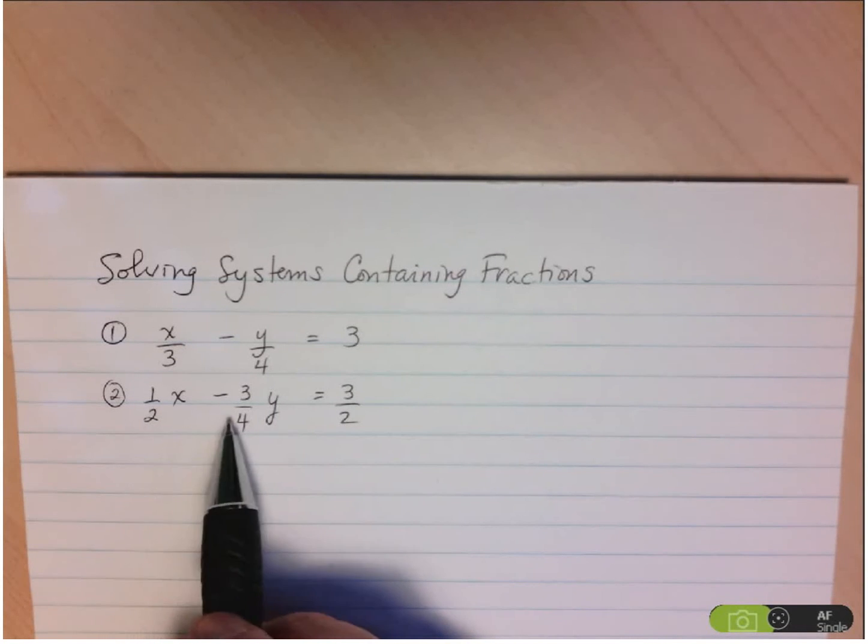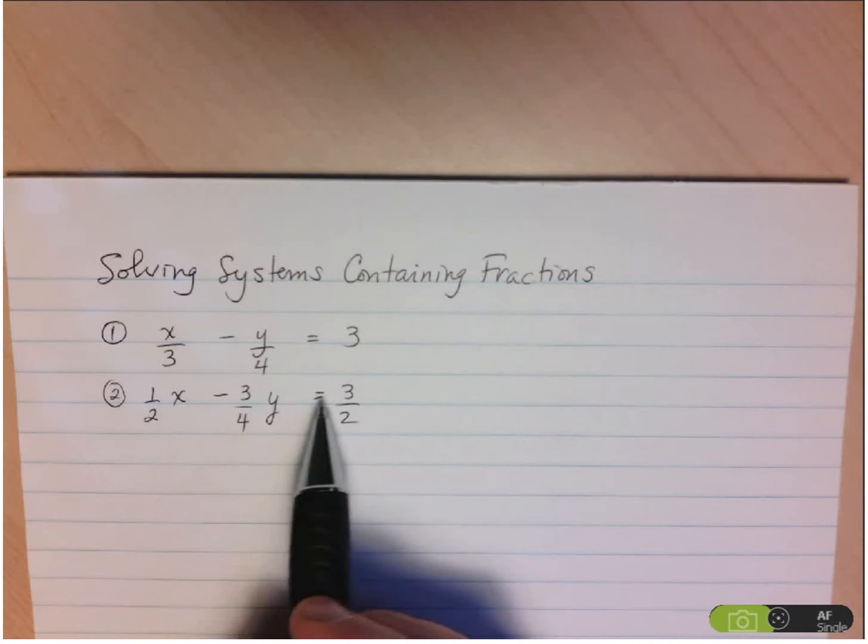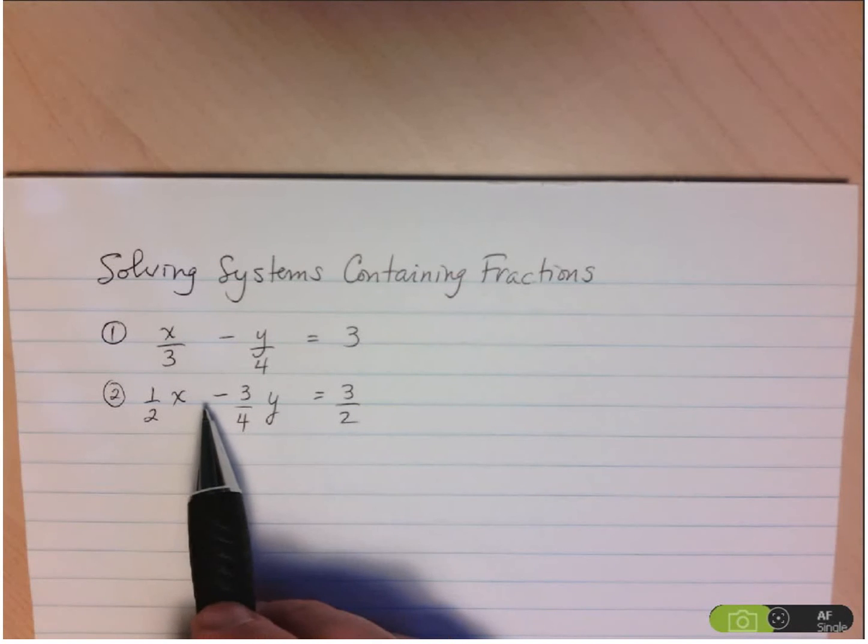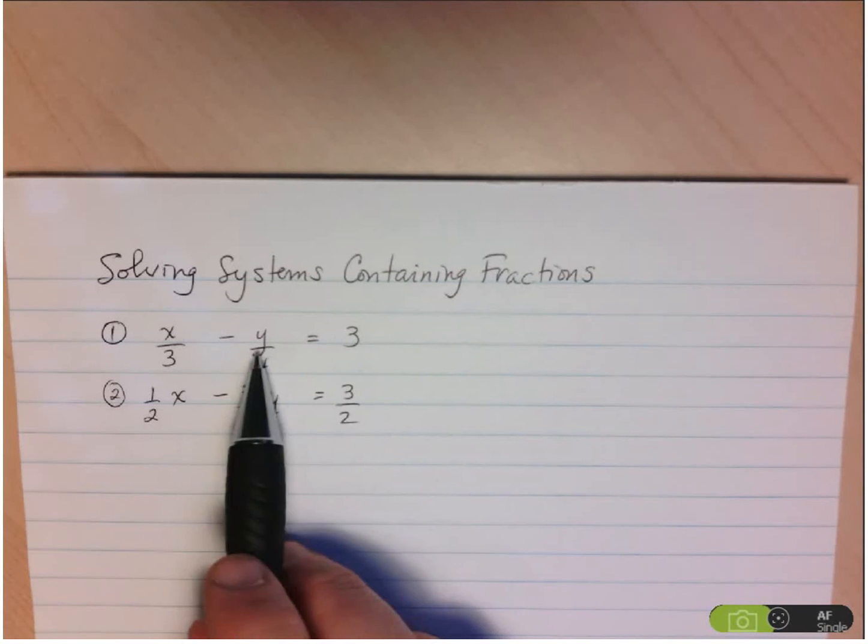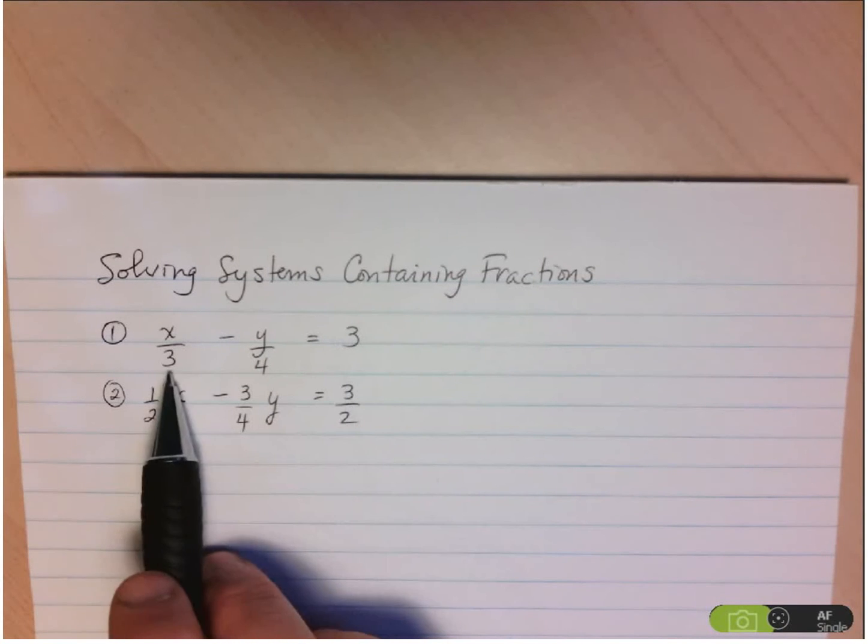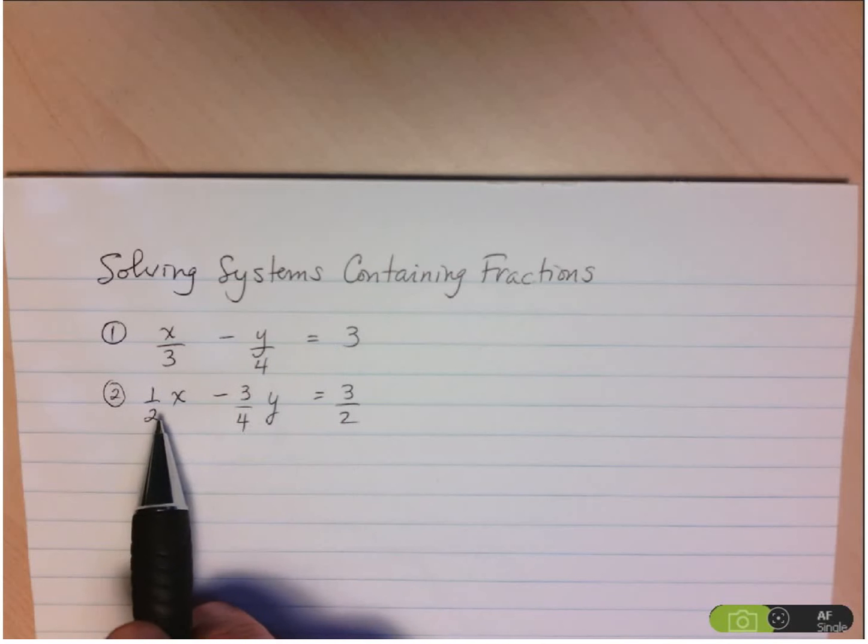We could try to work with it through substitution or elimination, as it is, or we can use an old trick that we saw earlier in the year. And what we did was we multiplied both sides of the equation by a number that would eliminate all the denominators that we see in the equation.